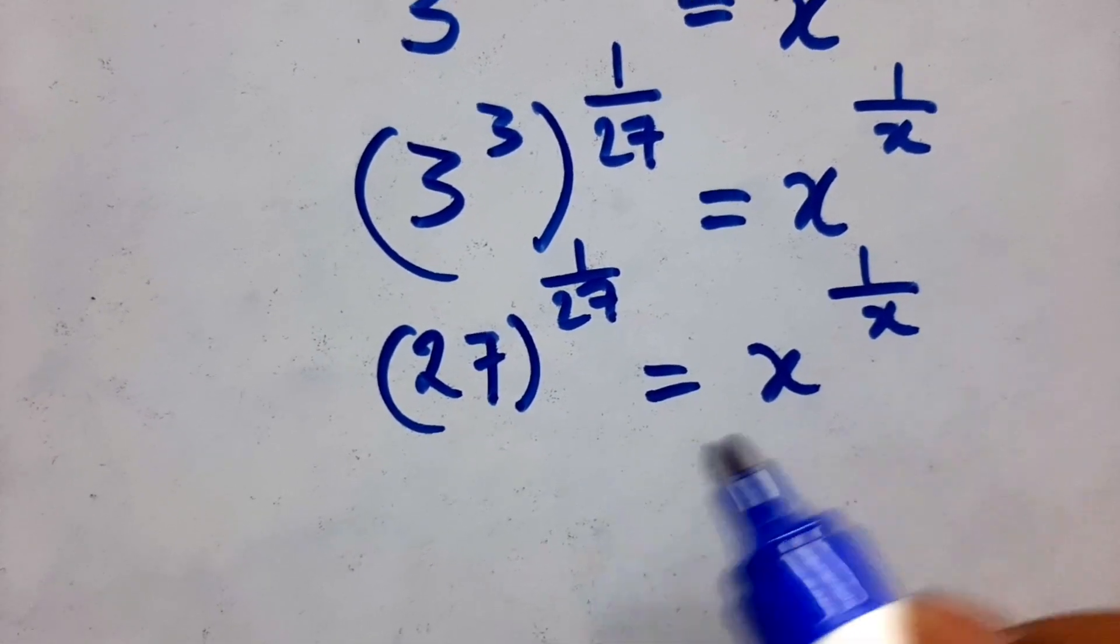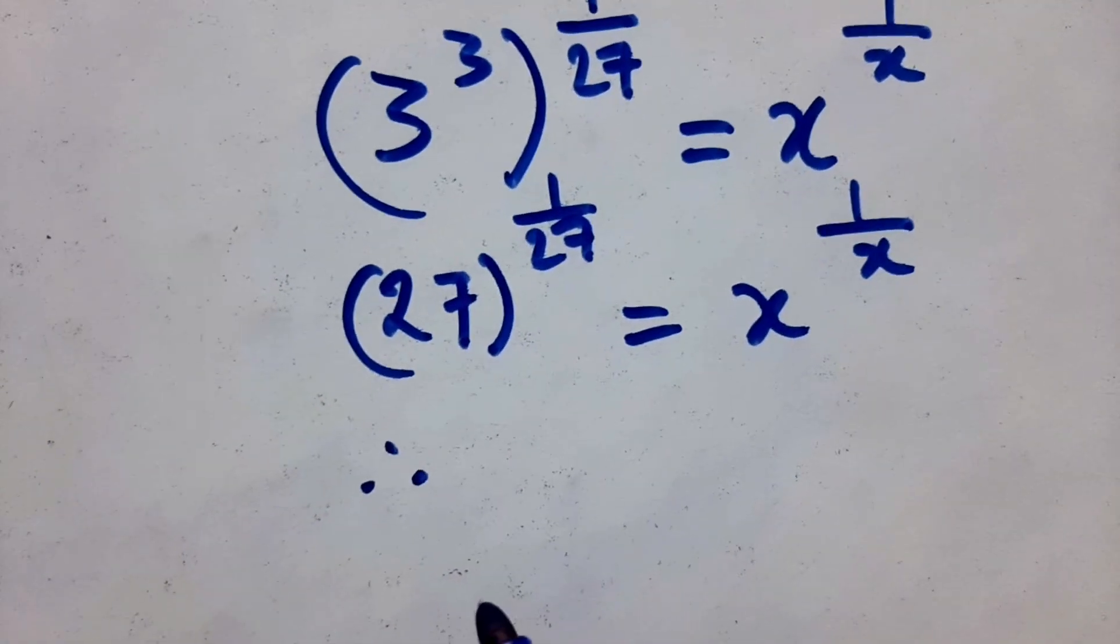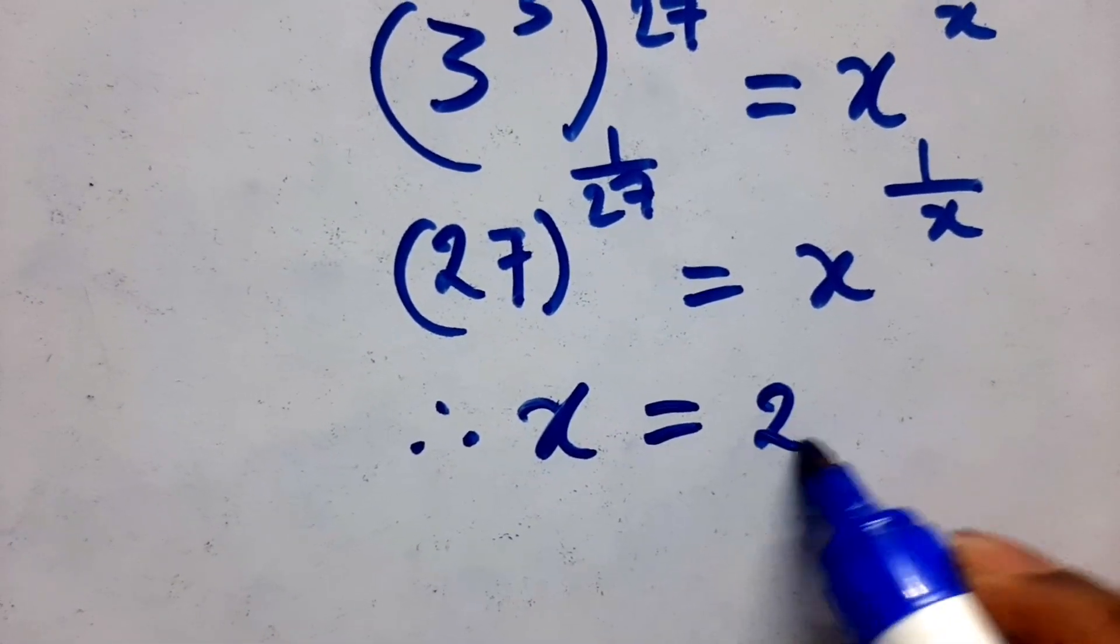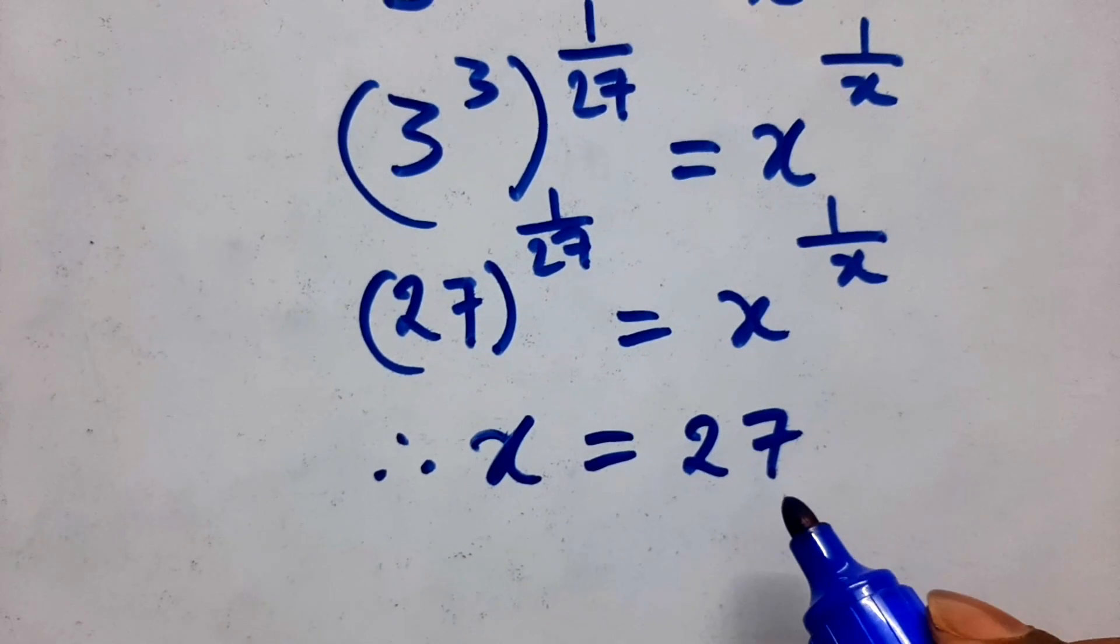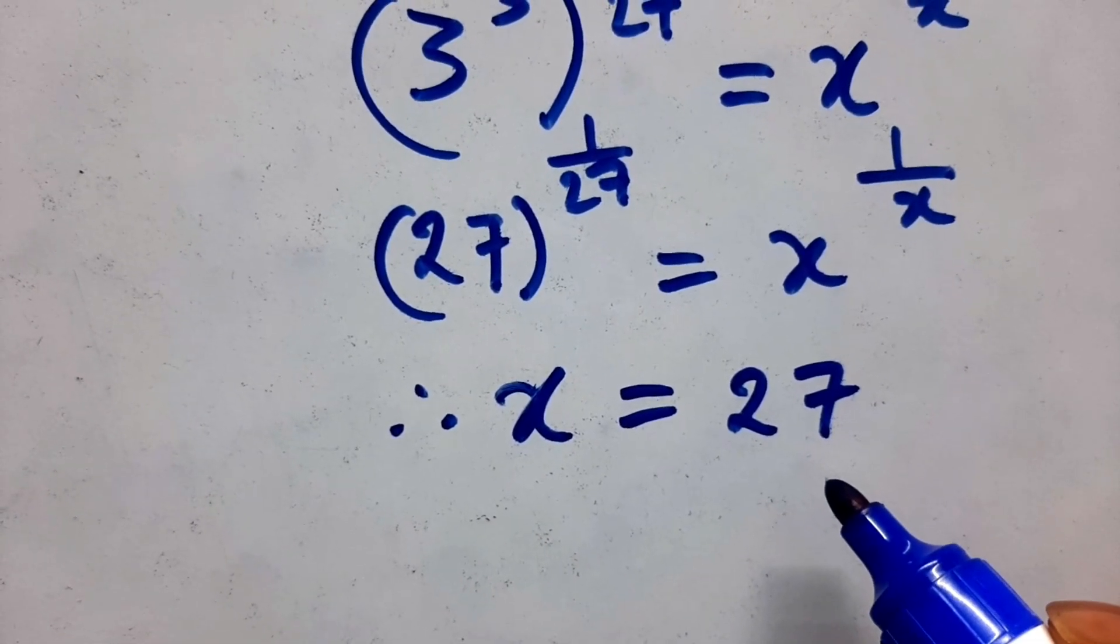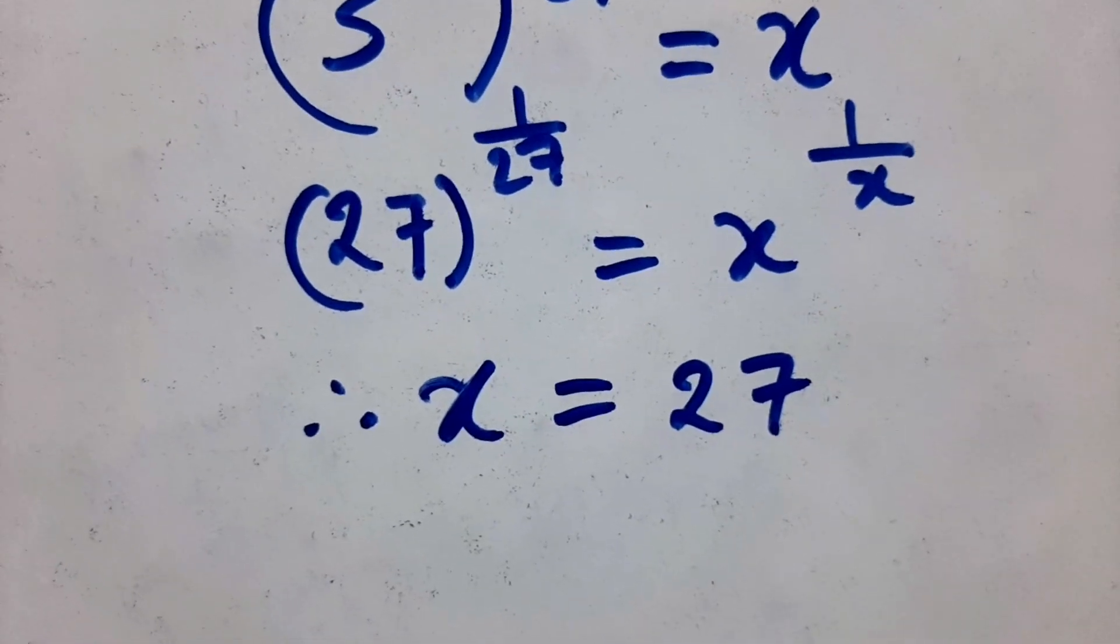So now we can say the x value is equal to 27. Do you understand? If you like this explanation, please like it, subscribe and share. Thank you, I'll see you again.